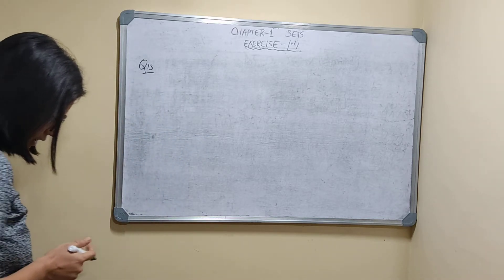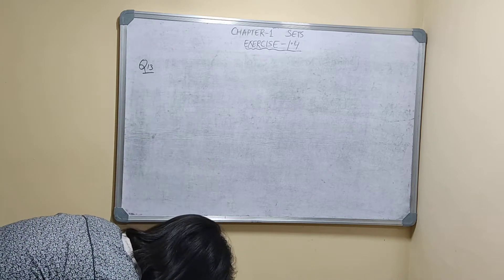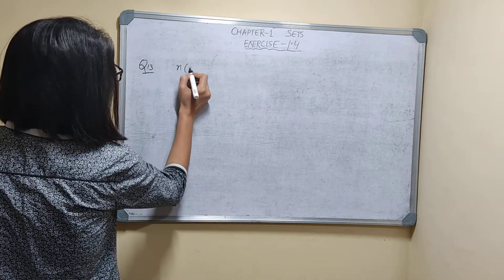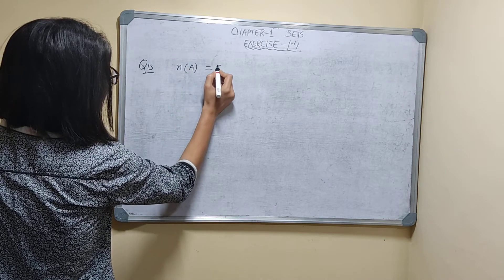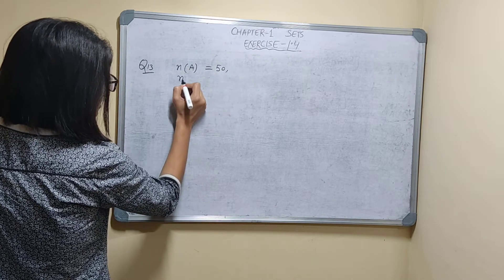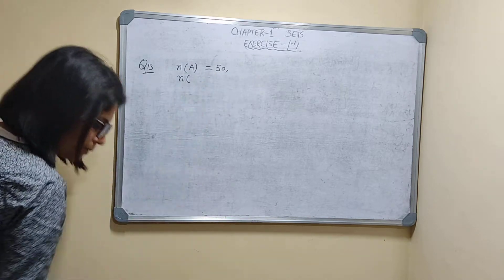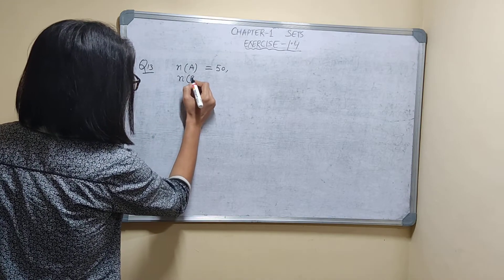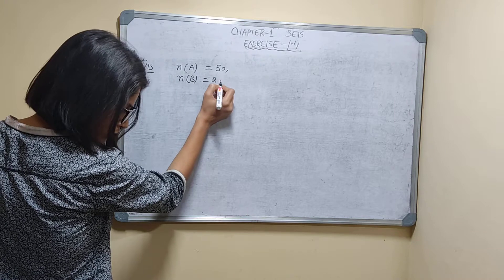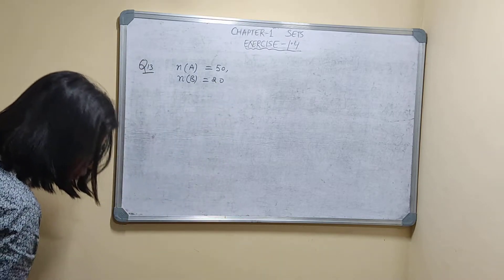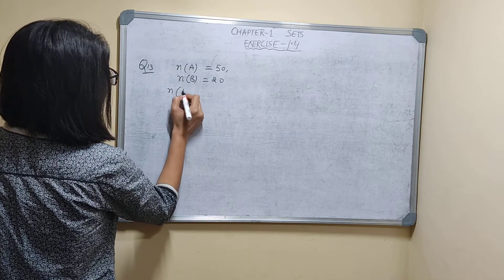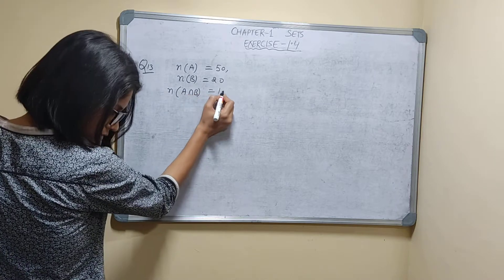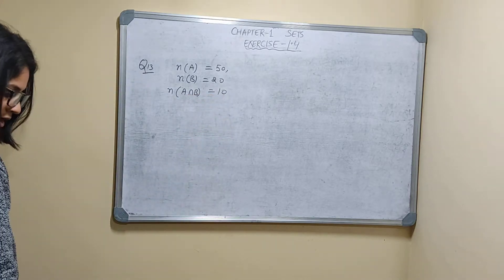In a group of people, 50 people read newspaper A, so n(A) is equal to 50. Newspaper B — how many can read newspaper B? n(B) is equal to 20. And 10 read both newspapers, so n(A ∩ B) is equal to 10.